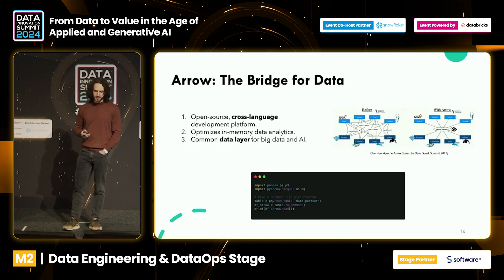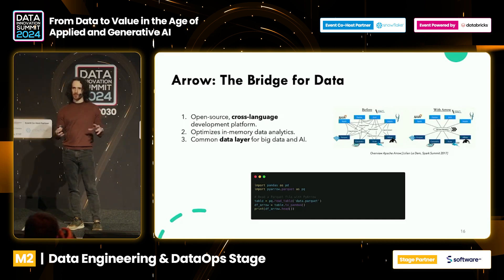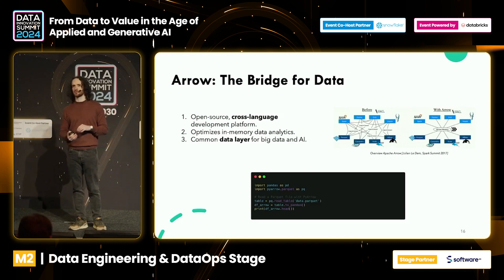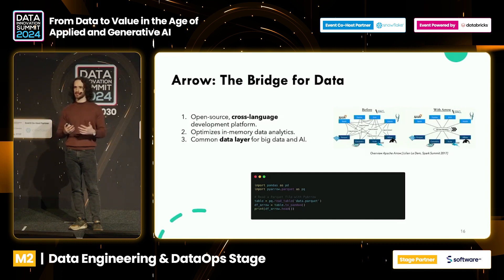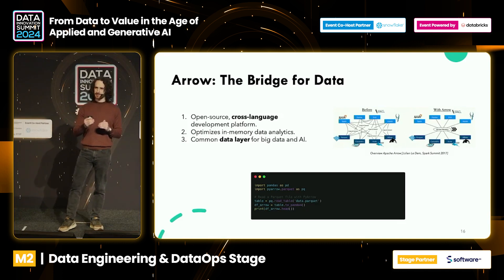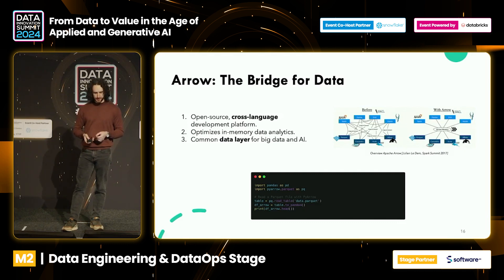One last point to understand before the comparison is Arrow — the bridge of data. Arrow, if you don't know, is a kind of cross-language platform that basically connects all these data platforms together. Before, if we wanted to move something from Spark to Cassandra, we had to serialize and deserialize data — very expensive operations. Now we have Arrow, which is a shared memory format, so we don't have to care about serializing and deserializing data. That's why in Pandas 2.0 we got PyArrow — an implementation of Arrow.